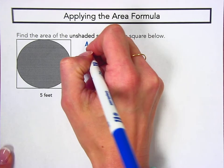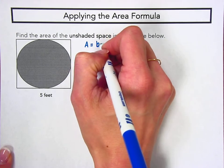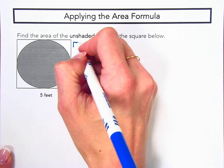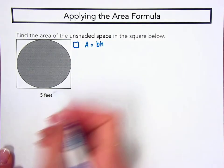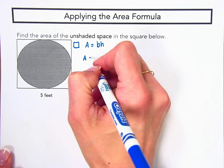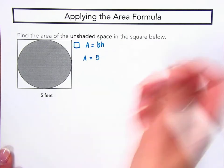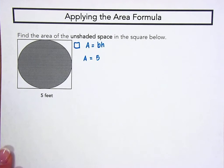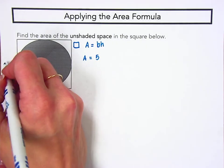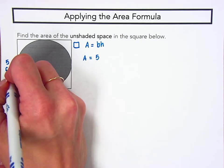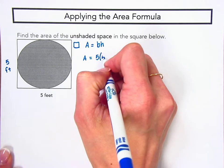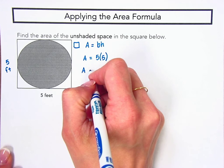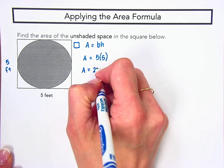We know to find the area of a square, we're going to use that formula base times height. In this case, we know the base of our square is 5 feet. And since we know the base is 5 feet and all sides on a square are the same length, we also know the height is 5 feet. So, our area is equal to 5 times 5, or the area of our square is 25 square feet.